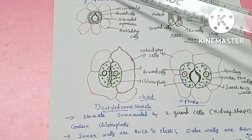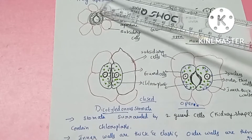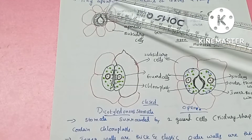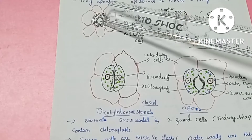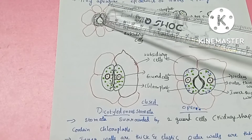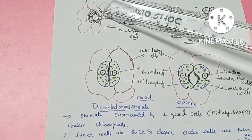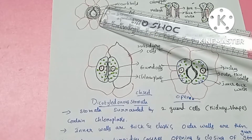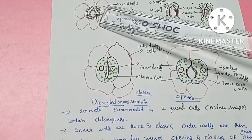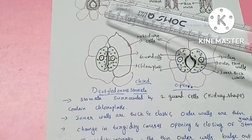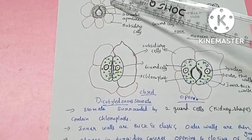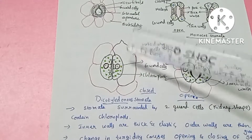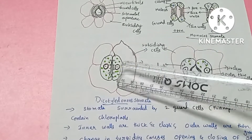Radially arranged cellulosic microfibrils are present in the guard cells. These microfibrils allow the stomata to open and close. Because of radially arranged cellulosic microfibrils, the stomata will open and close. Guard cells also have subsidiary cells, also called accessory cells.